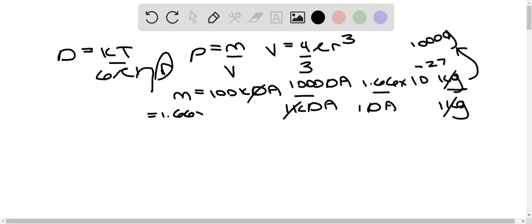So we have 1.66 times 10 to the negative 19 grams. Now we can solve for the radius because we have the volume. So 1.66, this number equals 4 thirds pi r cubed.